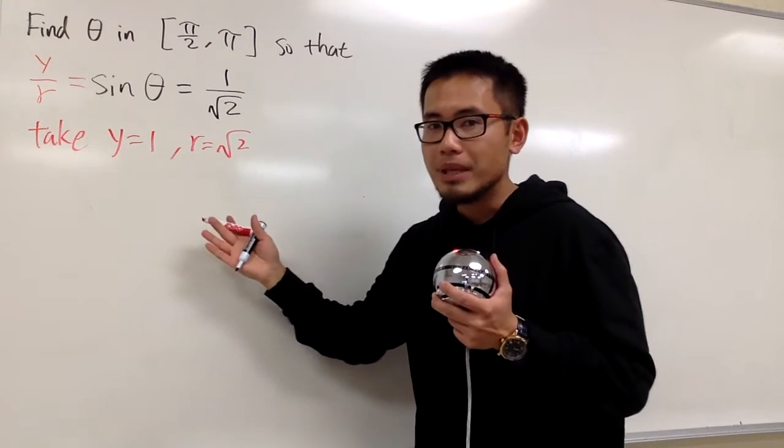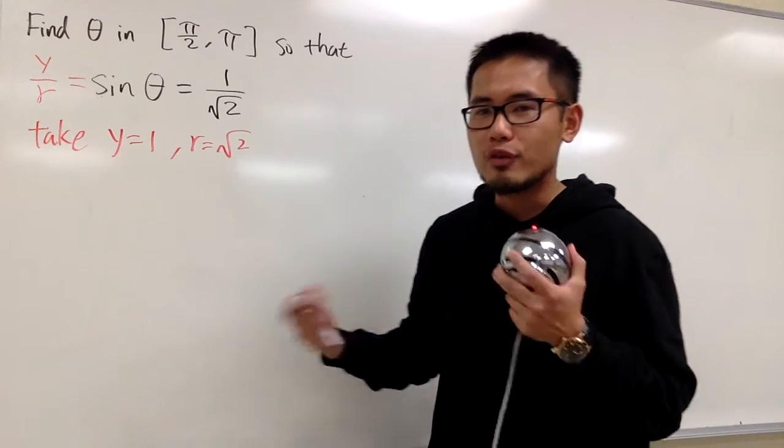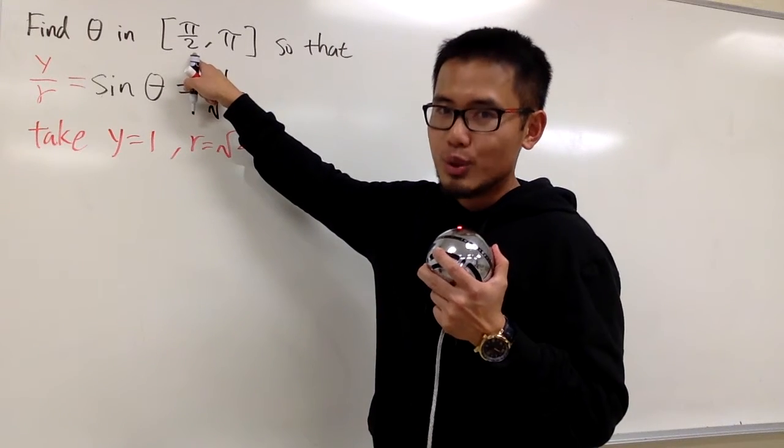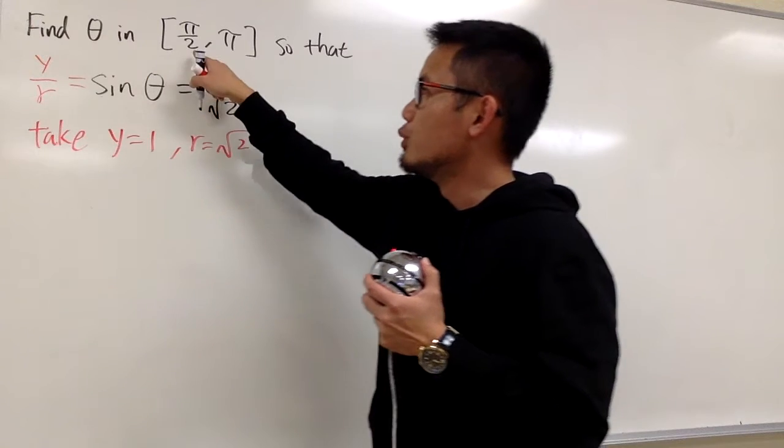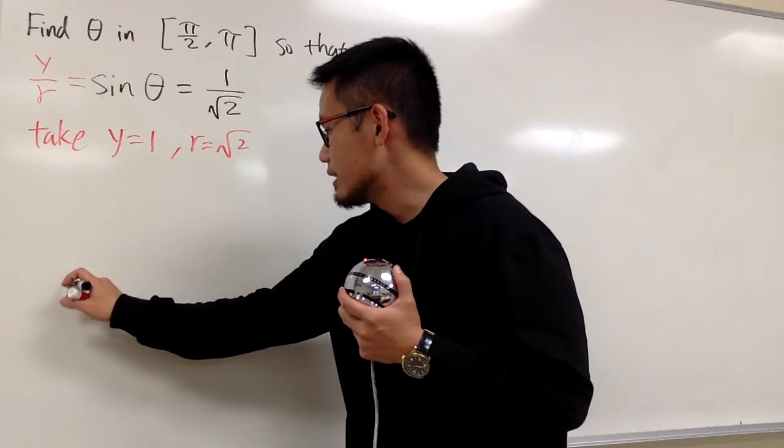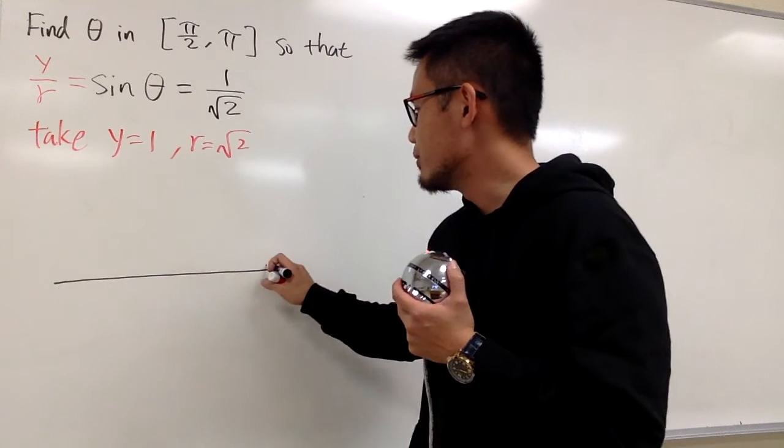And then we will be able to come up with a picture of a reference triangle. Be sure that we answer the question carefully. We want theta to be between pi over 2 to pi only. So let's focus on what exactly we have to do.